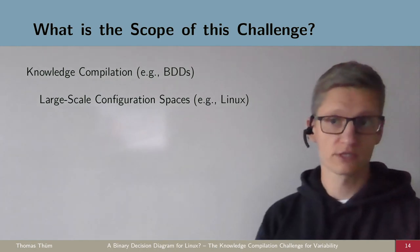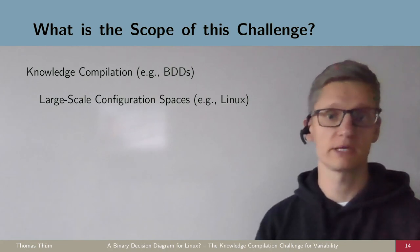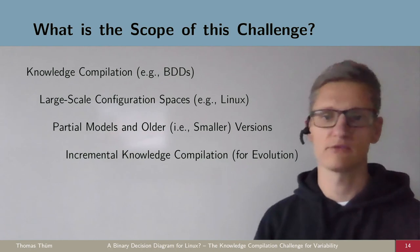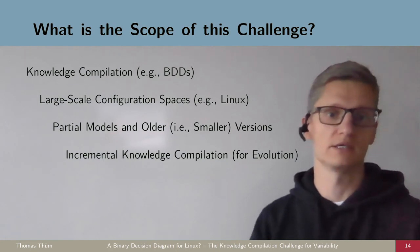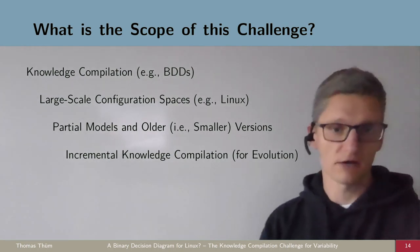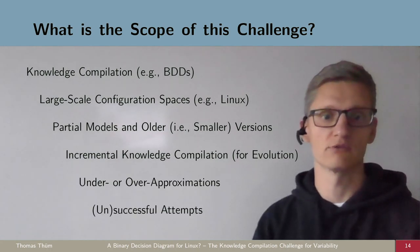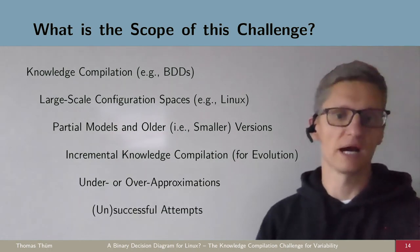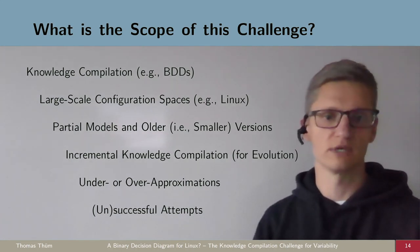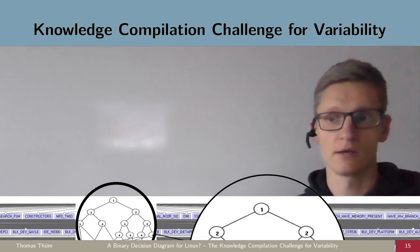What's in the scope of this challenge? Of course, knowledge compilation, not only BDDs. Large scale configuration spaces, not only Linux. Also partial and older models, because typically we have smaller versions and they're easier to cope with. And then there's incremental knowledge compilation, which means after an evolution step, I don't have to start from scratch, but I can reuse part of the effort. And then there might be under or over approximations, meaning that we take a subset of the constraints of Linux and model it for instance. And then of course, unsuccessful attempts.